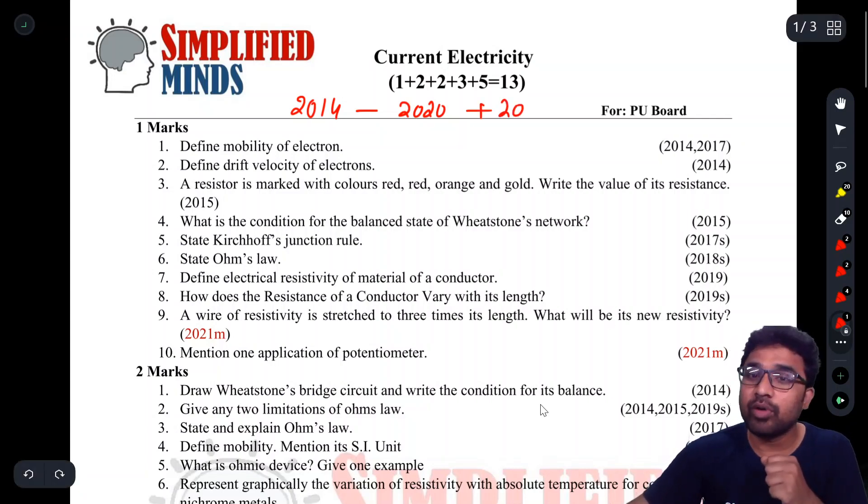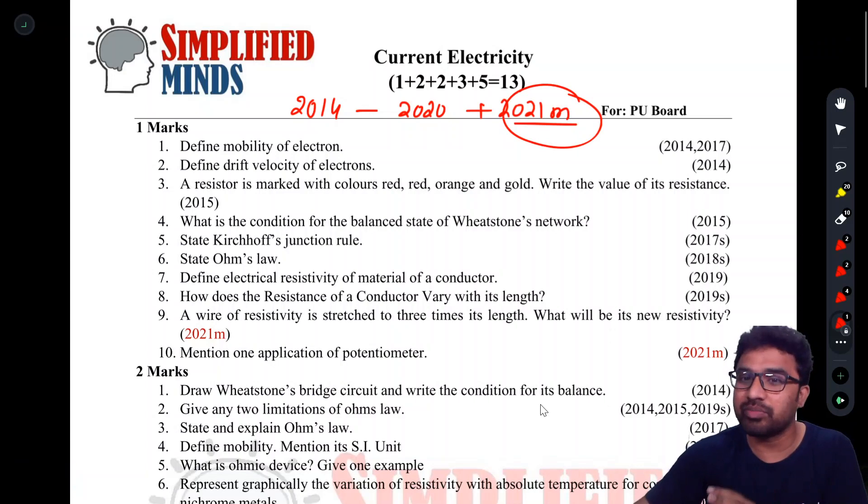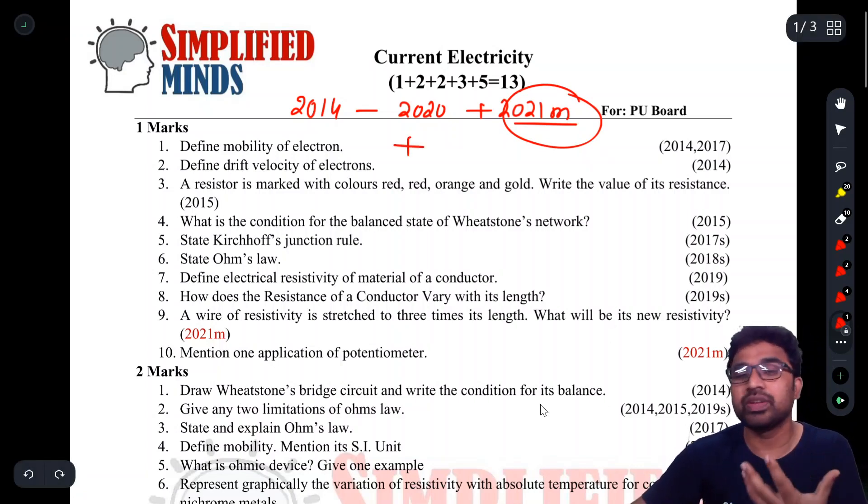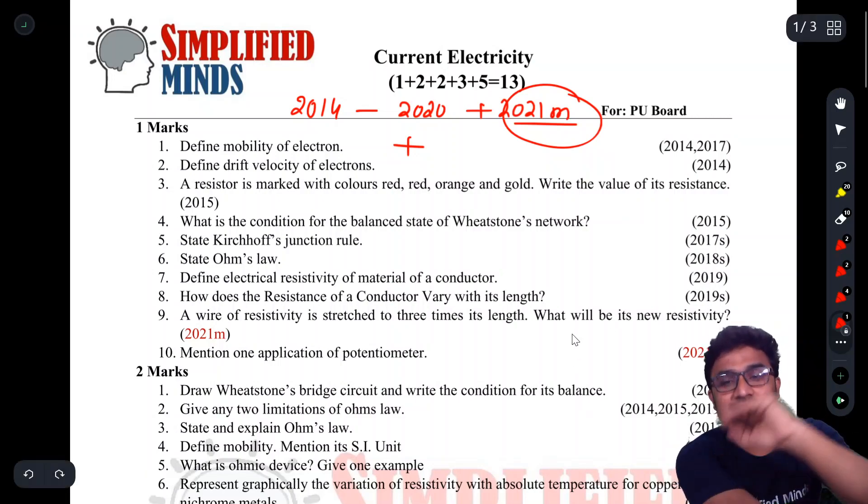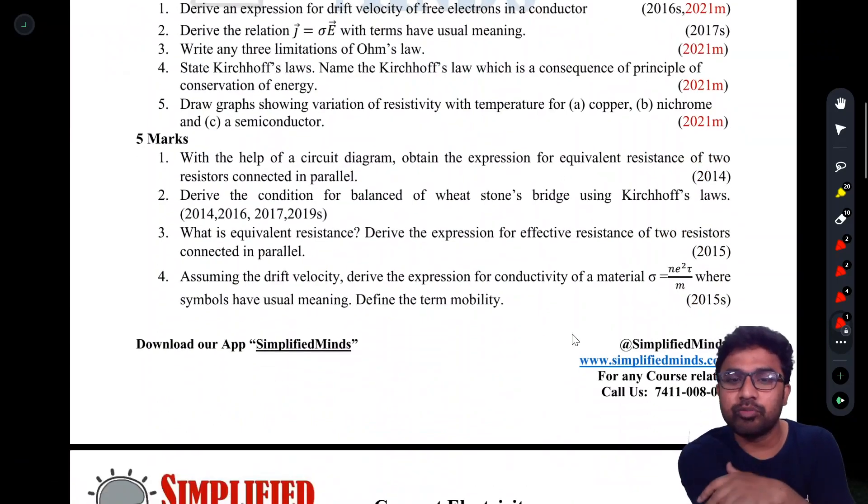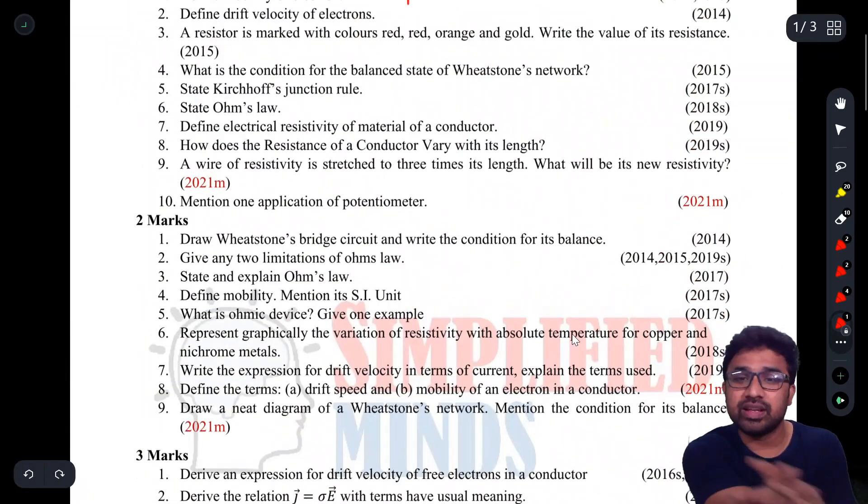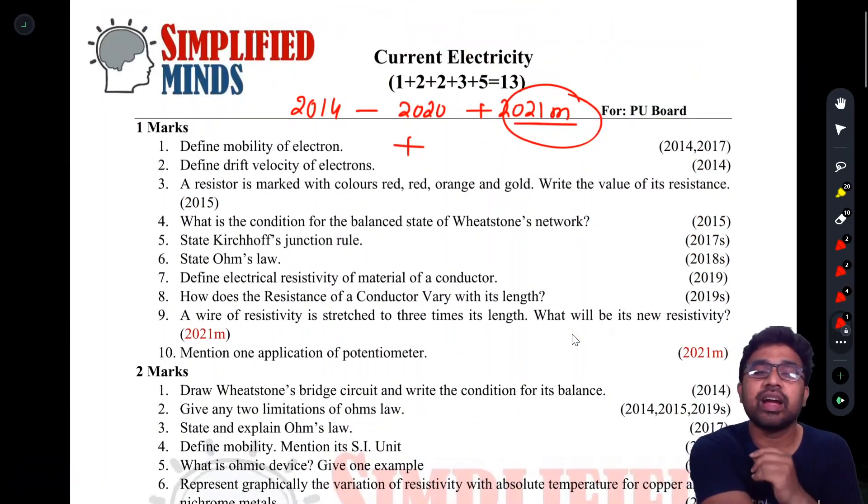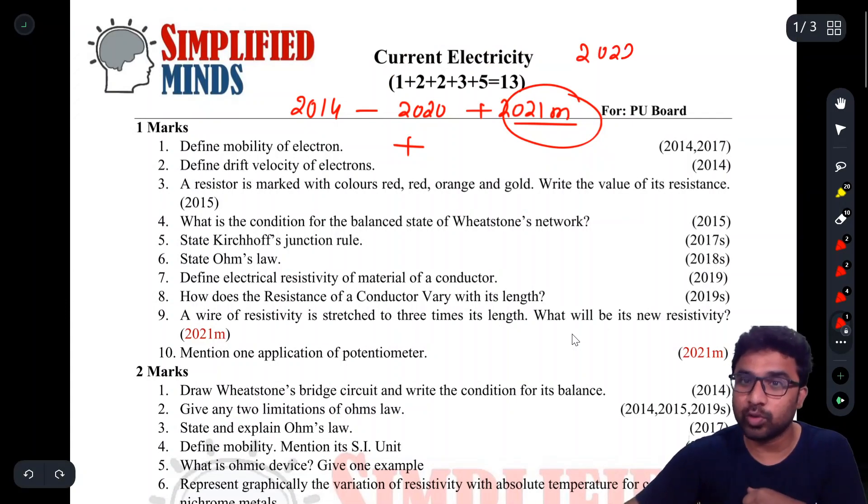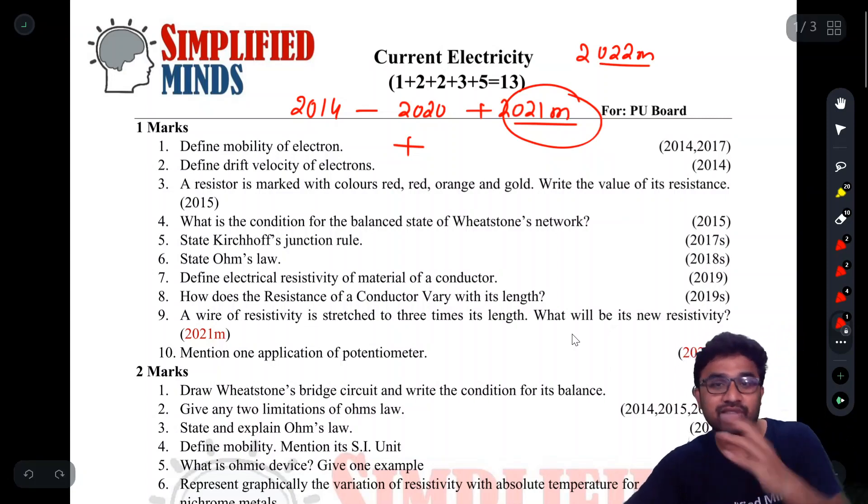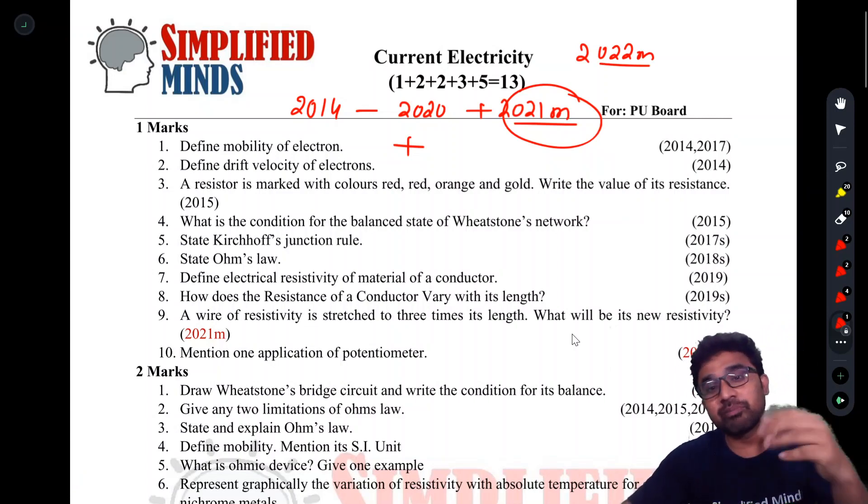2021 model papers - last year there was no final exam, you can check the model papers and supplementary papers. The PDF is available on our Simplified Minds site. Any further changes, even 2022 model papers, if there's a new section, the PDF will be updated.